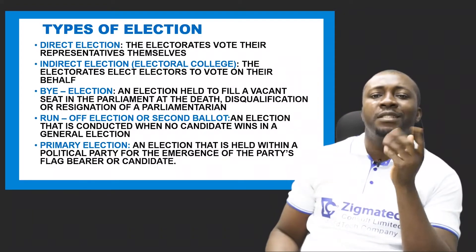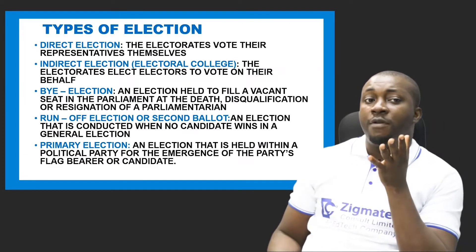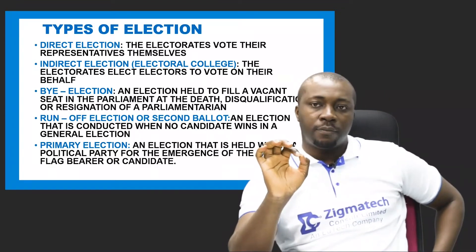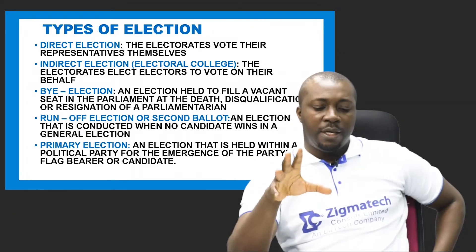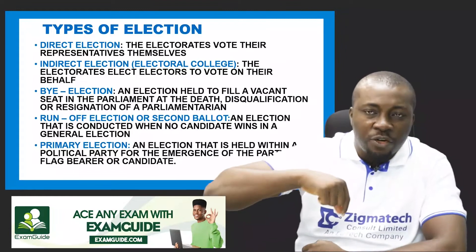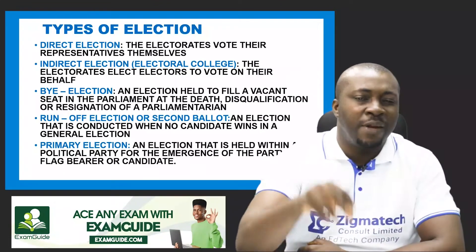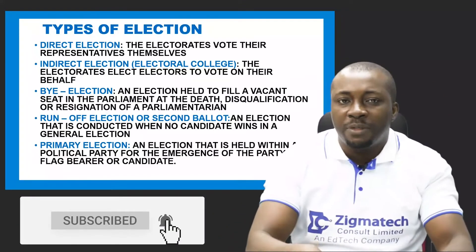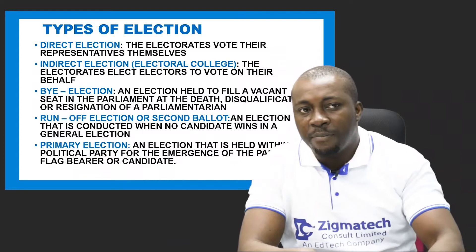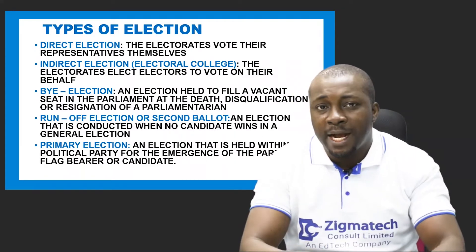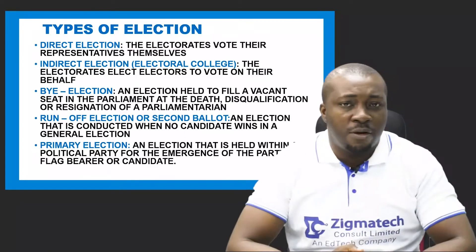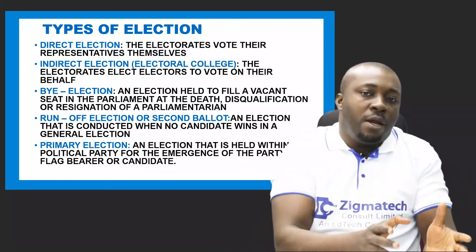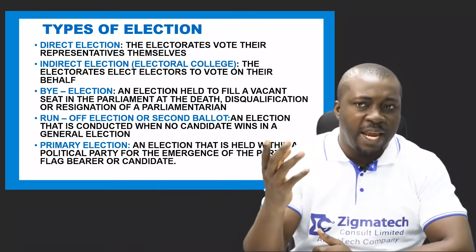Now let's look at the types of elections — there are different types, and you should be able to identify which type is being used when an election is conducted. Number one is what we call direct election. In direct election, the electorate vote for their representatives or leaders themselves — nobody is voting on their behalf. They come out on election day and cast their votes themselves. This type of election where they are directly involved in casting their votes is what we call direct election, practiced in many countries where the votes of the citizens are counted directly.